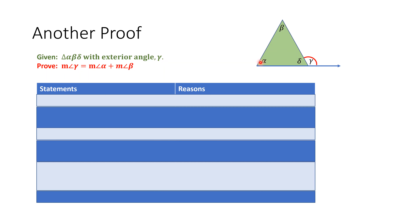If you notice, angles alpha and beta are much further away from gamma than angle delta is. Angle delta is right next to angle gamma, while angles alpha and beta are far away. Angles alpha and beta are referred to as remote interior angles — they are remote from gamma because they are the furthest away, and they're interior angles because they are inside the triangle.